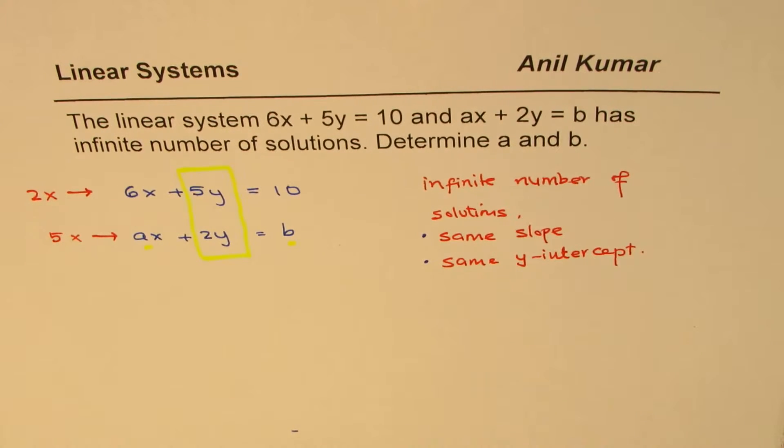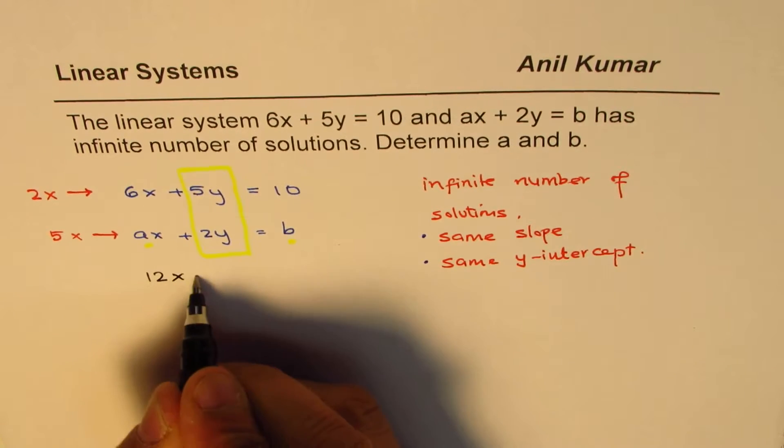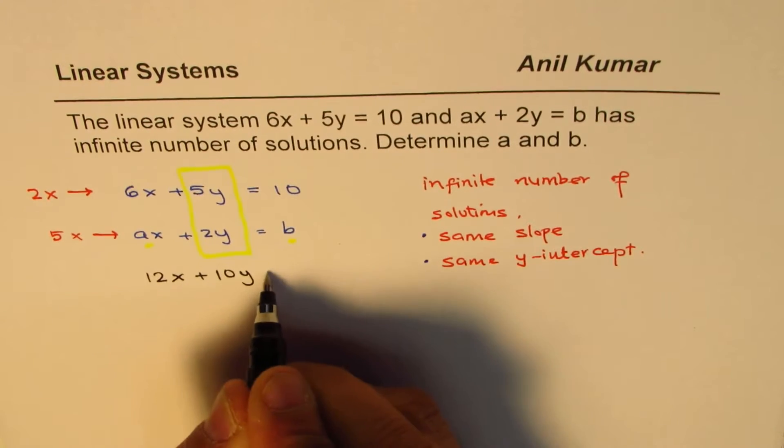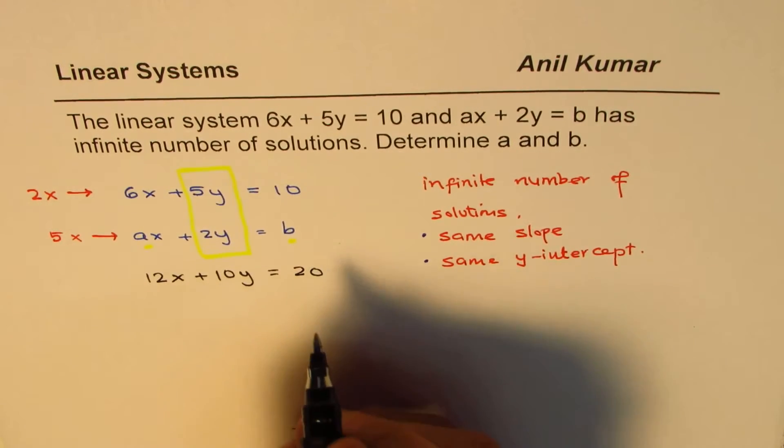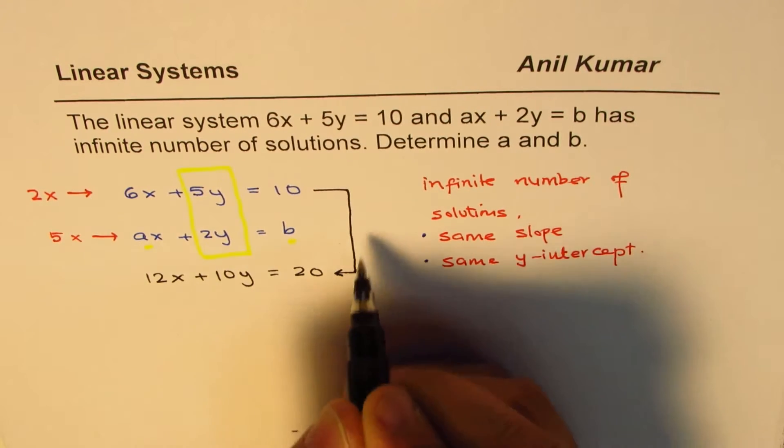So if I multiply the first equation by two, what do I get? I get 12x plus 10y equals 20. So this is what I get when I multiply this equation by two.